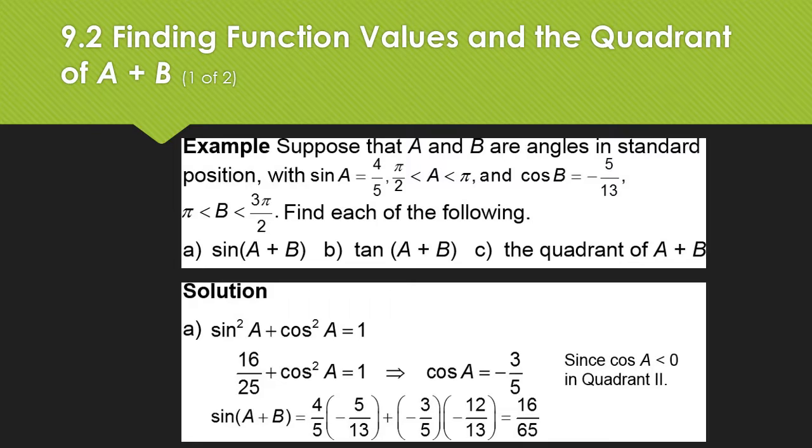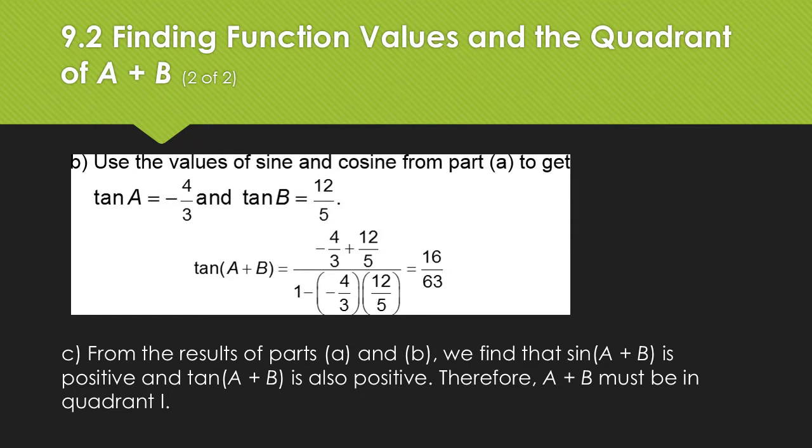For the sine of A plus B, first of all, we need to know what the cosine of A is. We know the sine. Then we'll need to find the sine of B. But we can just use our Pythagorean identities for that. Just because we're in a new section doesn't mean we've tossed those aside. First solve for the cosine of A, and then you can find the sine of A plus B. We can use the values of sine and cosine from part A to get the tangent. Remember the relationship of tangent to sine and cosine. From A and B, we find that the sine of A plus B is positive, and so is the tangent. If both of those are positive, then the angle has to be in quadrant 1.